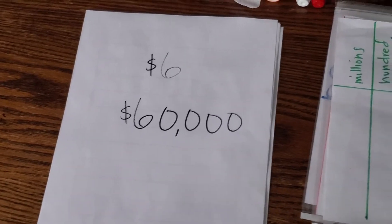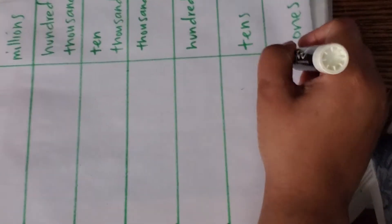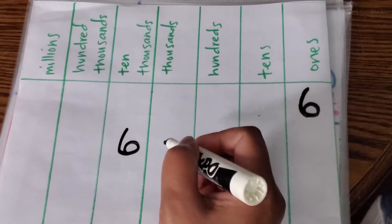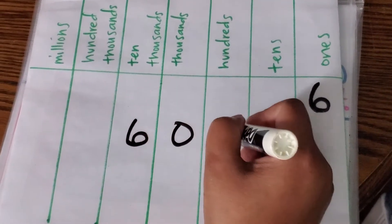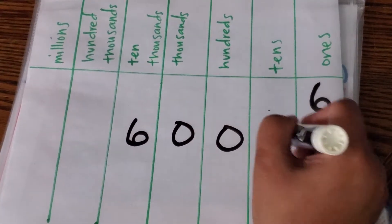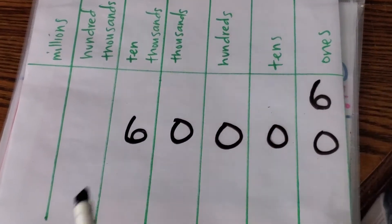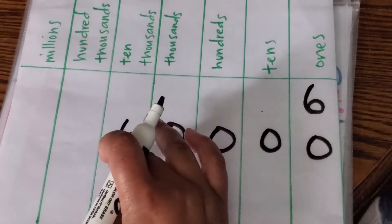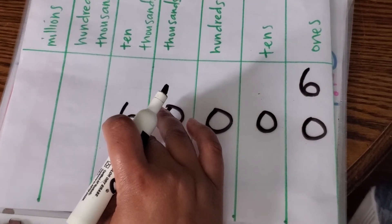If you were to write six on a place value chart, you'd have one six in the ones place. And then $60,000, you would have a six in the $10,000 place, a zero in the thousands, zero in the hundreds, zero in the tens, zero in the ones. That's the difference between six ones and $60,000 is pretty big.